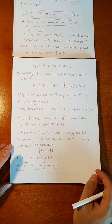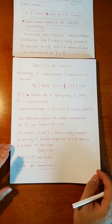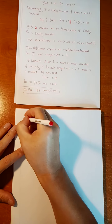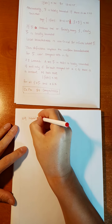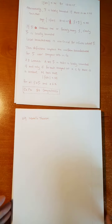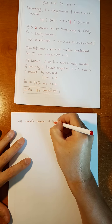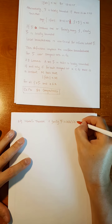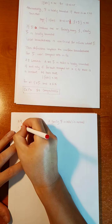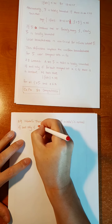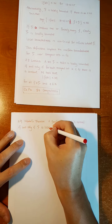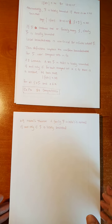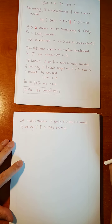Now we are going to use this local boundedness for the family in H(G) to develop a result similar to the Arzelà–Ascoli theorem. That is Theorem 2.9, Montel's theorem: a family F in H(G) is normal if and only if F is locally bounded. This is a very nice, clean result — normal equals locally bounded.